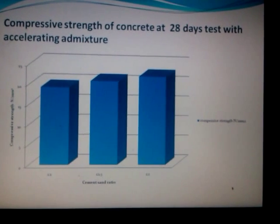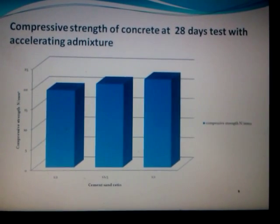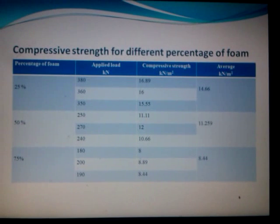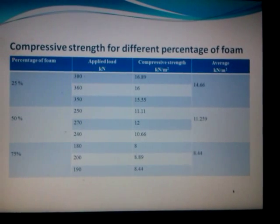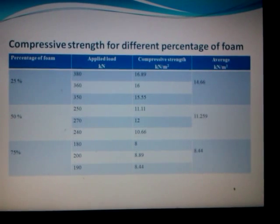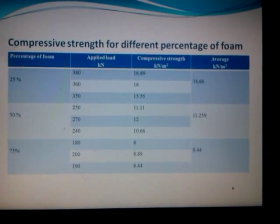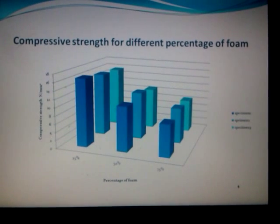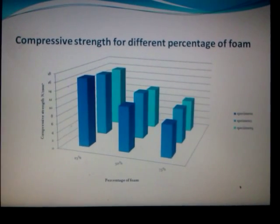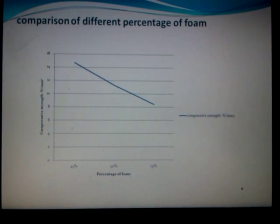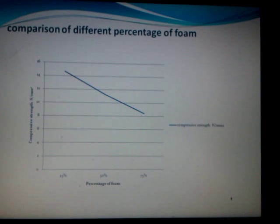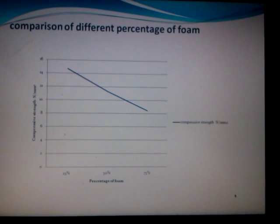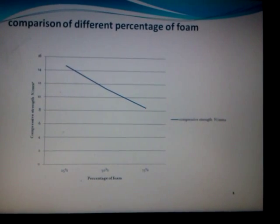This is the graph for compressive strength at 22.359 MPa with accelerating admixture. Cubic specimens were also differentiated by adding different percentages of foam: 25%, 50%, and 75%. The compressive strength is graphically represented for each foam percentage. From the graph, it is evident that compressive strength at 25% foam is greater than that of 50% and 75% foam cubes.